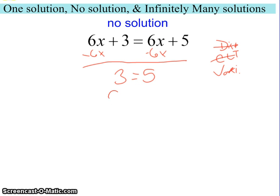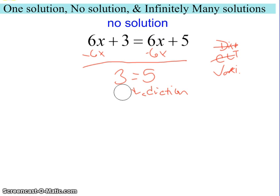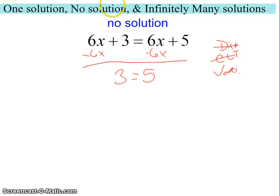So now we're left with this weird statement that is not true. This is a contradiction because we cannot have 3 be the same as 5. So that's a contradiction — this can't happen. So there must be no number that we can plug in that would give us a true statement.